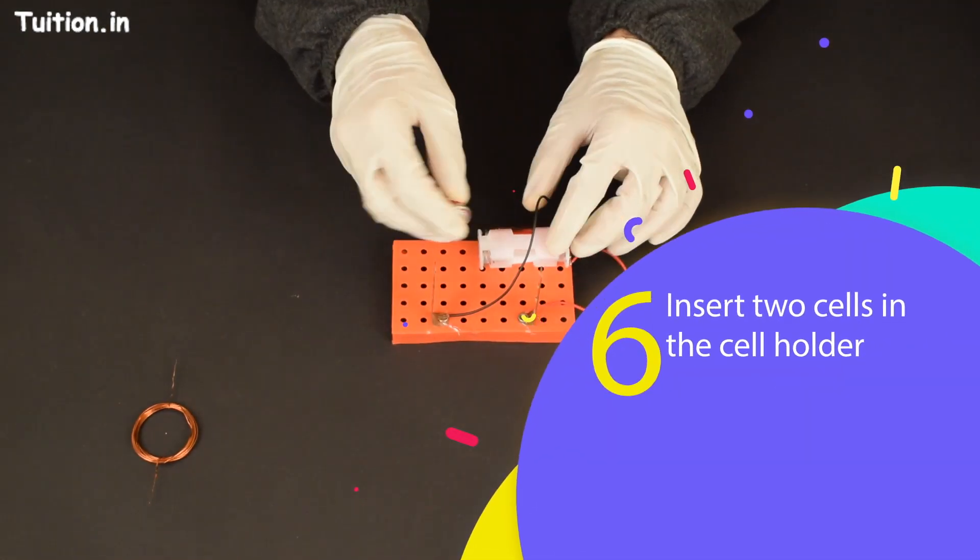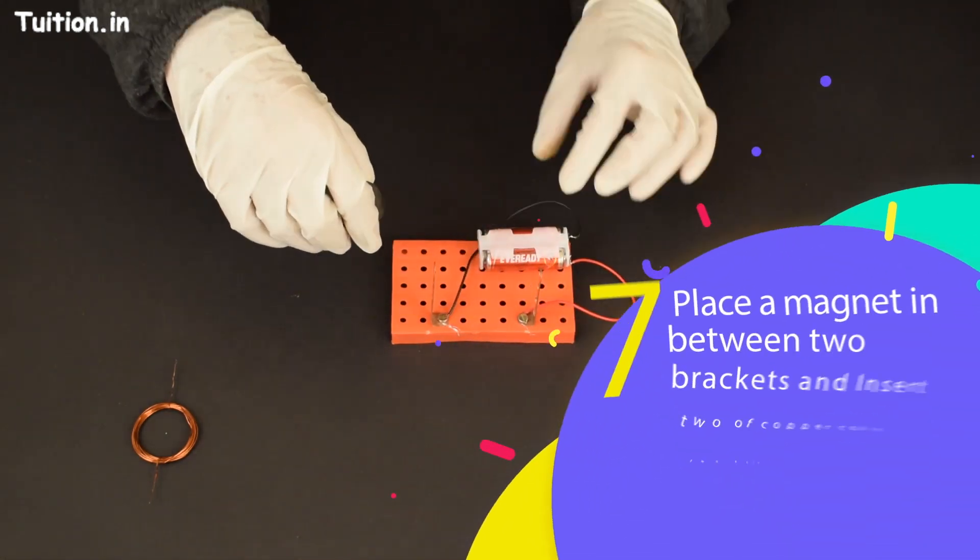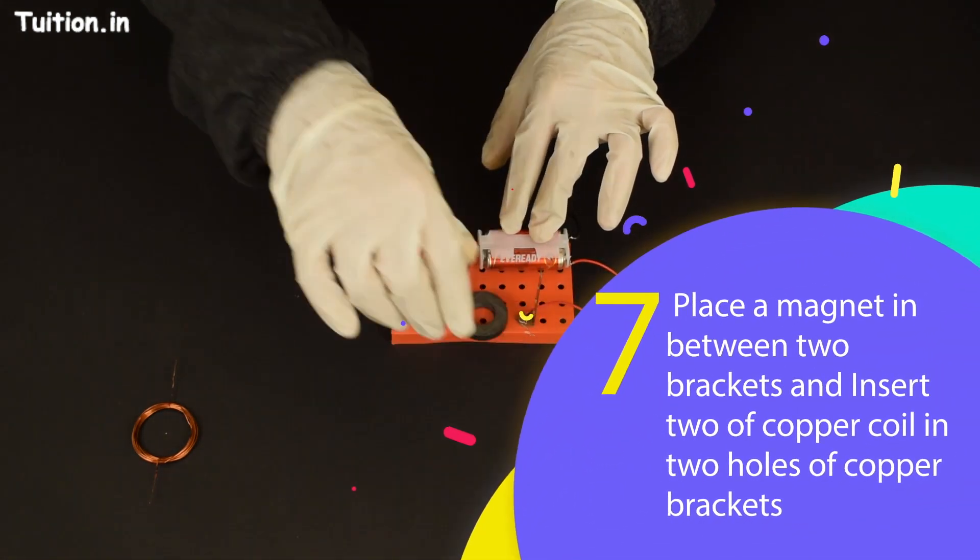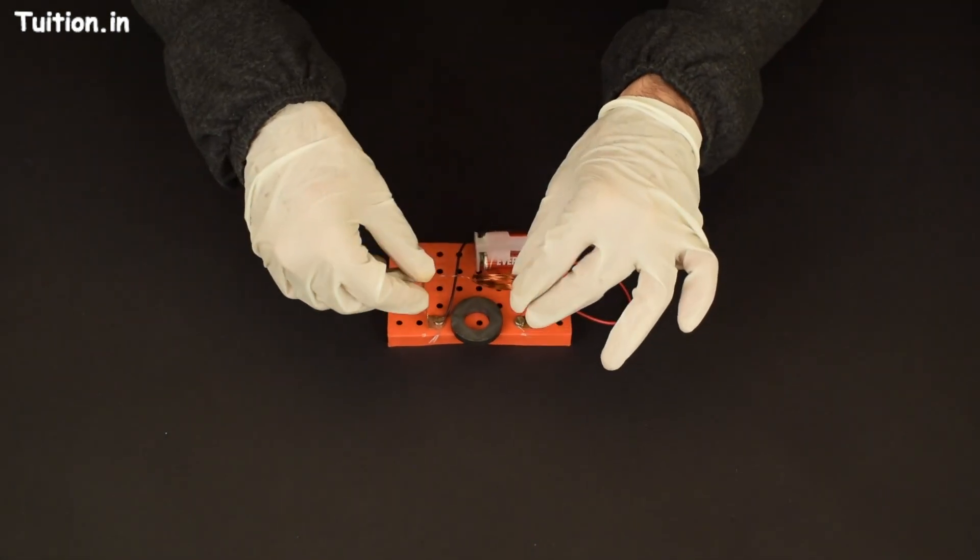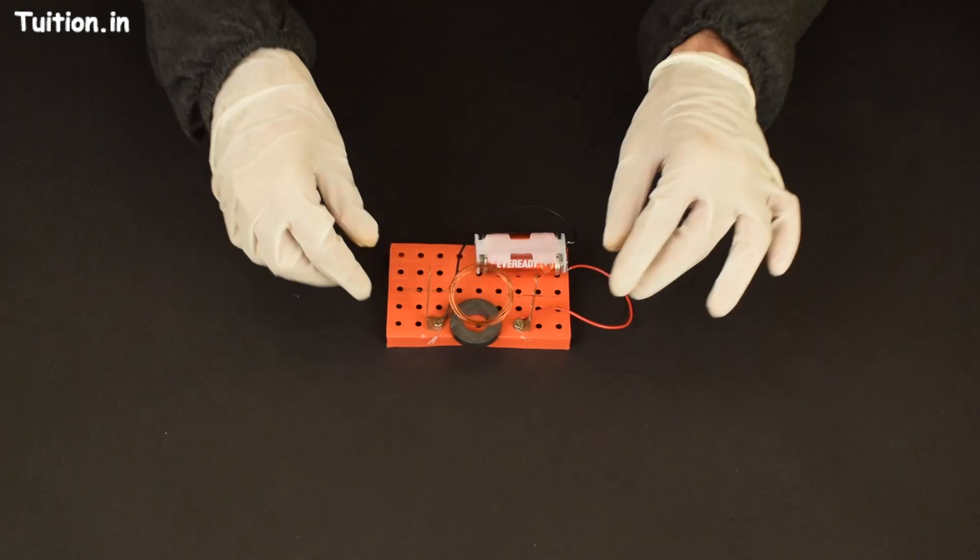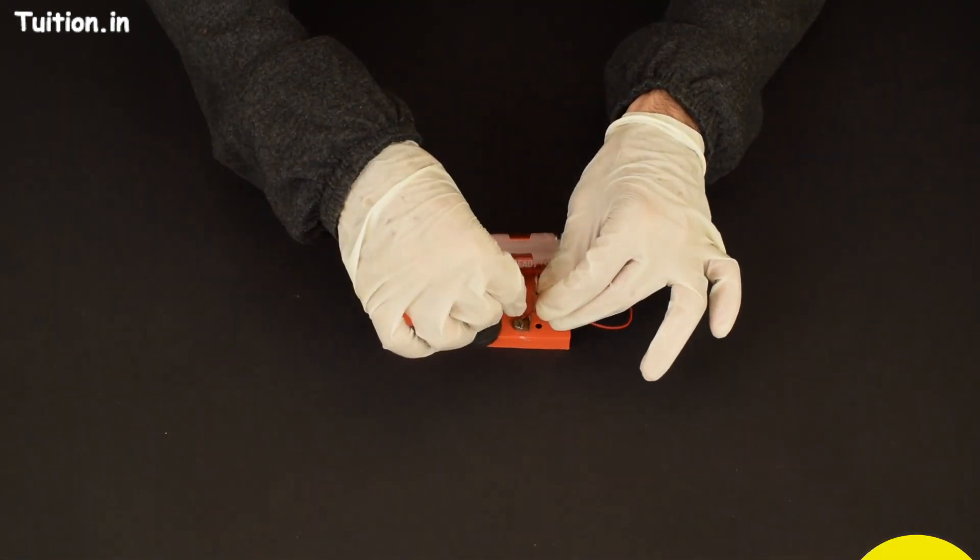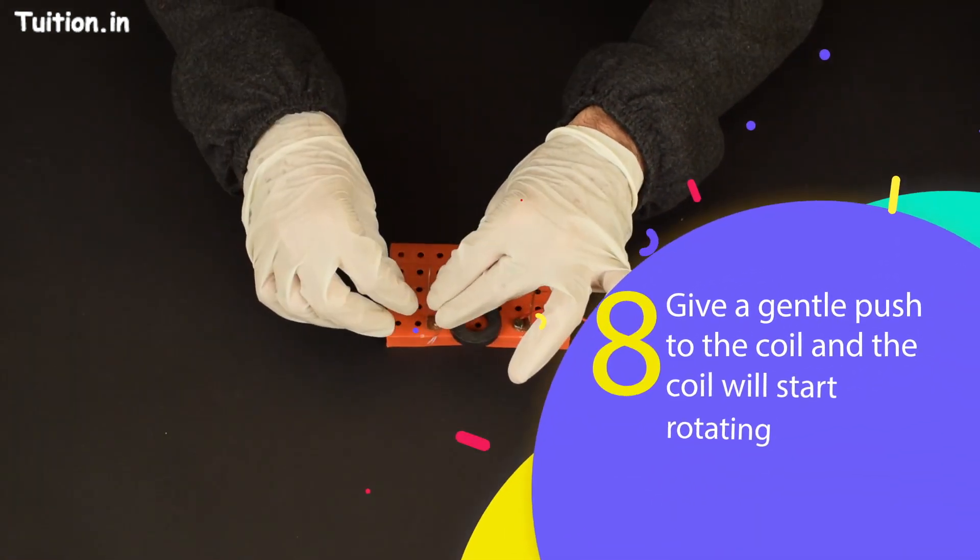Insert two cells in the cell holder. Place a magnet in between the two brackets of copper brackets. Insert two ends of copper coil in two holes of copper brackets. Give a gentle push and the magic begins.